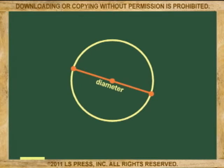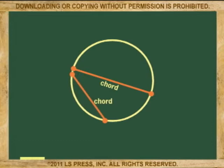If from the previous definition we remove the center reference and just call it a segment that goes from one point on the circle to another point on the circle, the name changes to chord. This, of course, makes the diameter a special chord — the largest one in the circle.